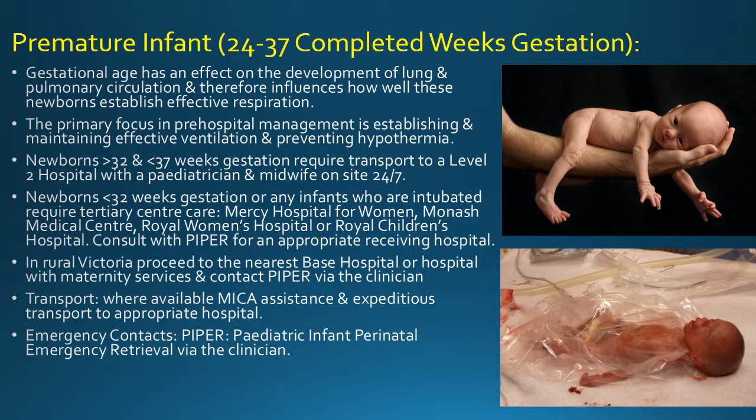The primary focus in pre-hospital management is establishing and maintaining effective ventilation and preventing hypothermia. Newborns greater than 32 and less than 37 weeks gestation require transport to a level 2 hospital with a paediatrician and midwife on site 24/7. Newborns less than 32 weeks gestation or any infants who are intubated require tertiary centre care: Mercy Hospital for Women, Monash Medical Centre, Royal Women's Hospital or Royal Children's Hospital. In rural Victoria, proceed to the nearest suitable hospital with maternity services and contact Piper via the clinician.